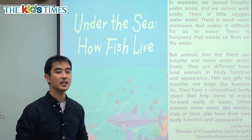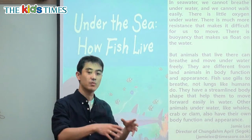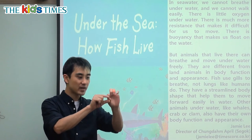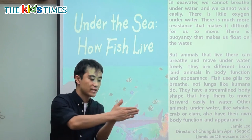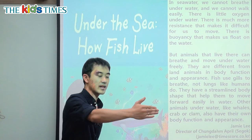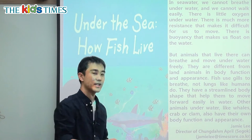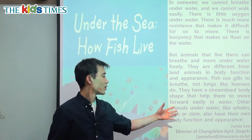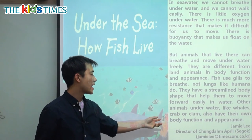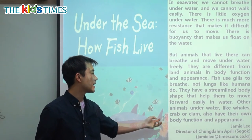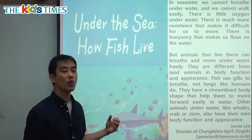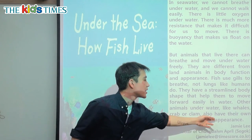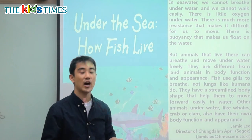Streamlined body shape means the body shape is very straight like this, so they can move very easily. Other animals underwater, like whales, crabs, or clams, also have their own body function and appearance.